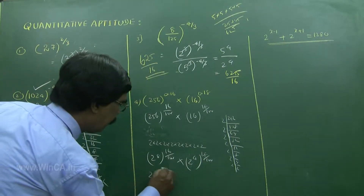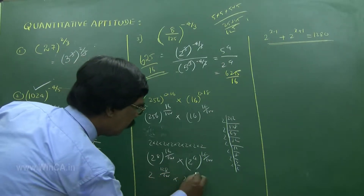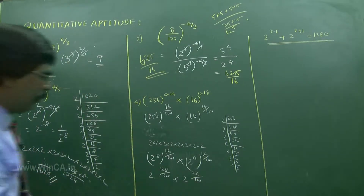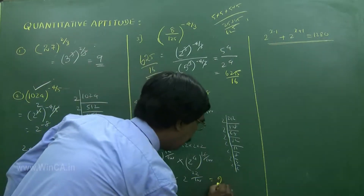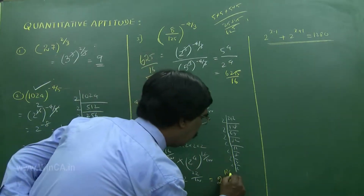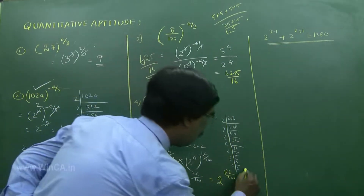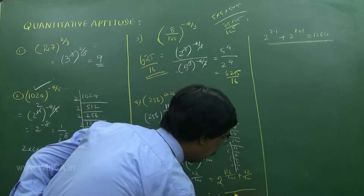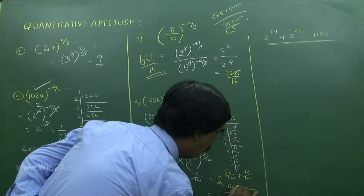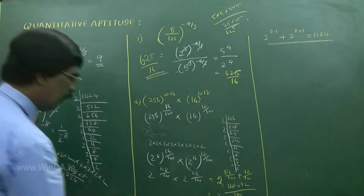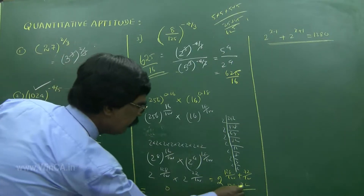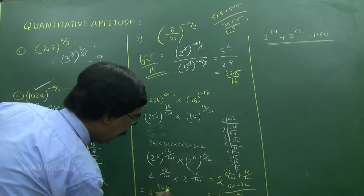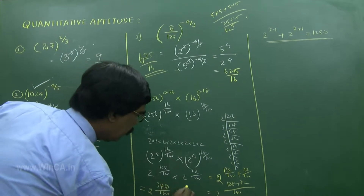This gives 2 power 128 by 100 and 2 power 72 by 100. Now add the exponents: take LCM as 100, giving 128 plus 72 over 100. That is 2 power 300 by 100 — cancel to get 2 power 3. The answer is 8.